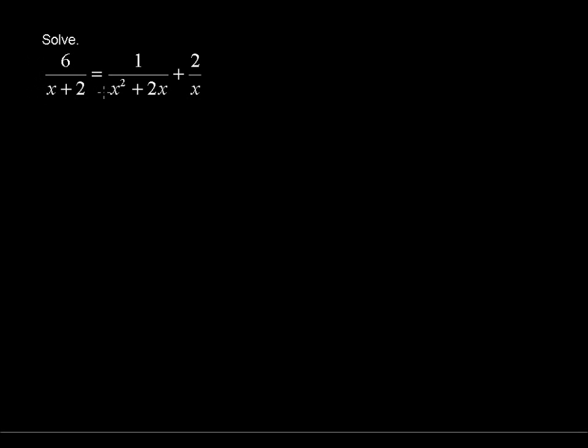6 over x plus 2 equals 1 over x squared plus 2x plus 2 over x. This is what we call a rational equation because it's got these rational expressions inside the equation. And it is an equation because we have an equal sign.